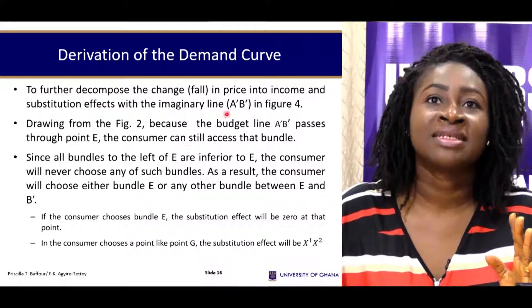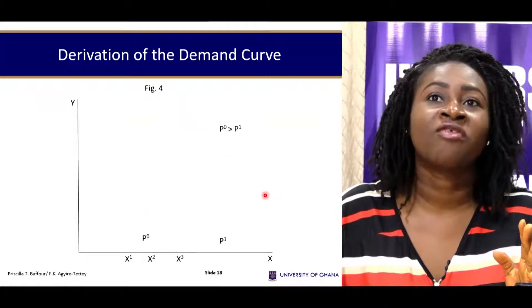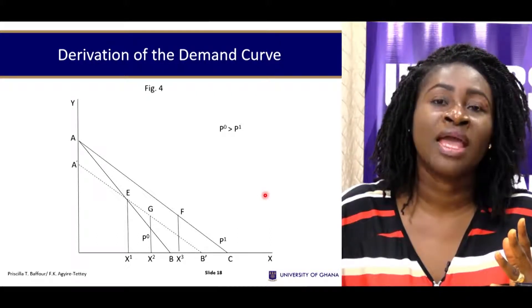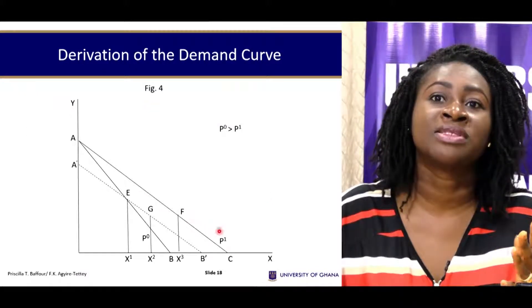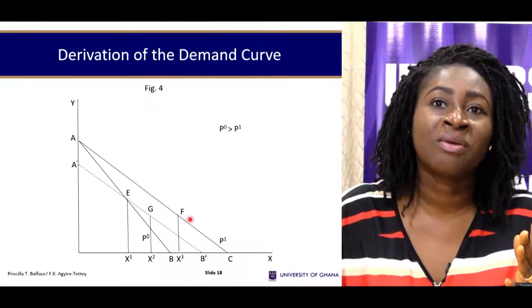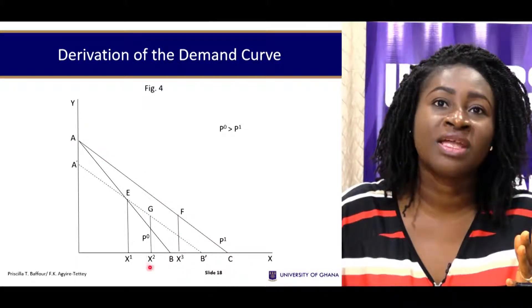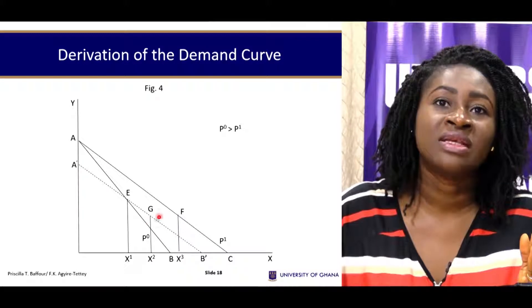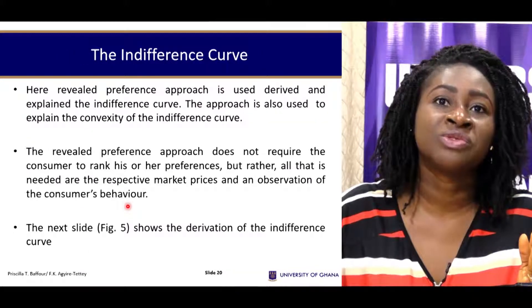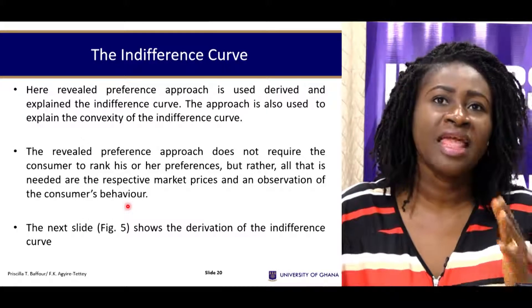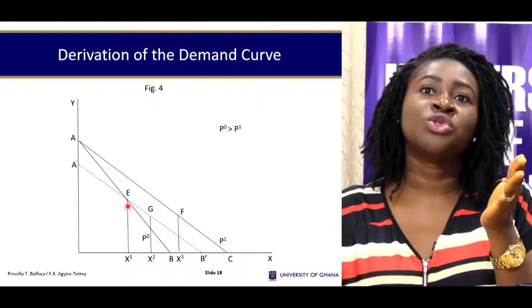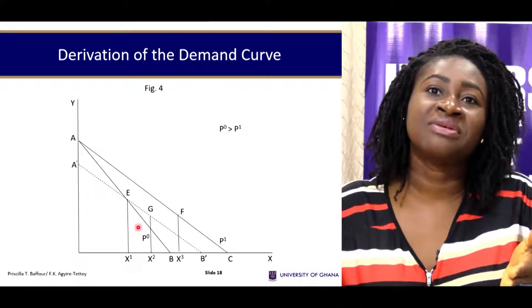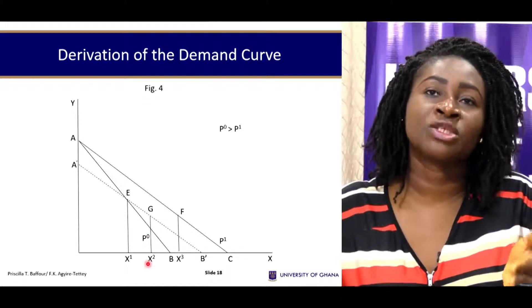In terms of deriving the demand curve from the revealed preference approach, the same principle applies — we look at changes in the price of the commodity. With an increase in the price of the commodity, originally the budget constraint had point E chosen. The price increase shifts the consumer to point F, and after some compensation the point moves to G. From this, we can plot the demand curve showing that as price increases, the consumer demands less of the good.